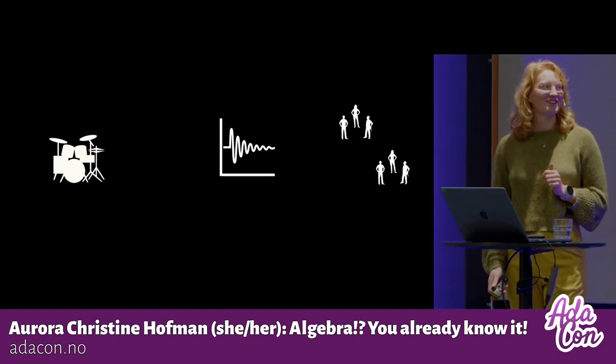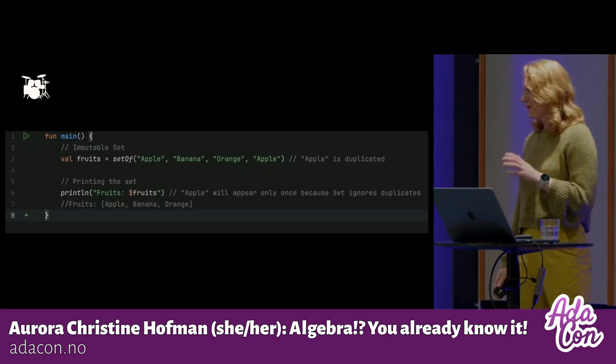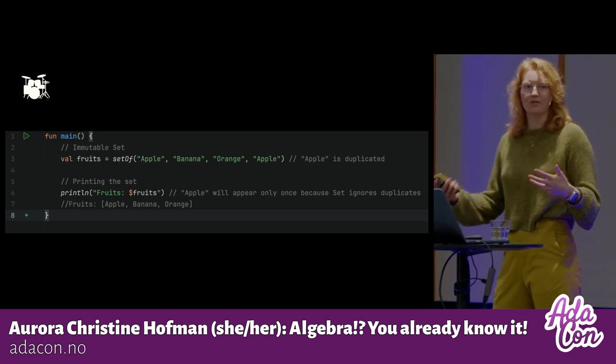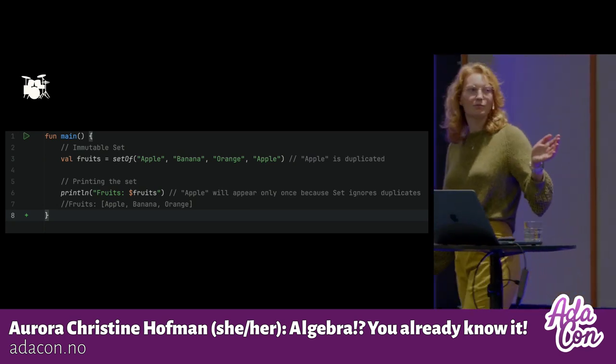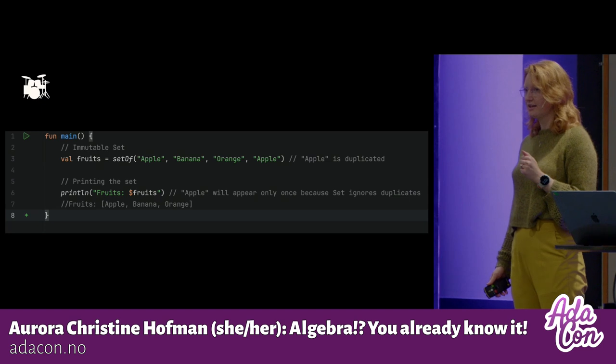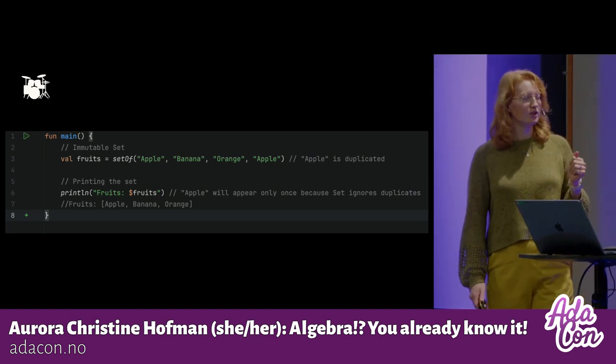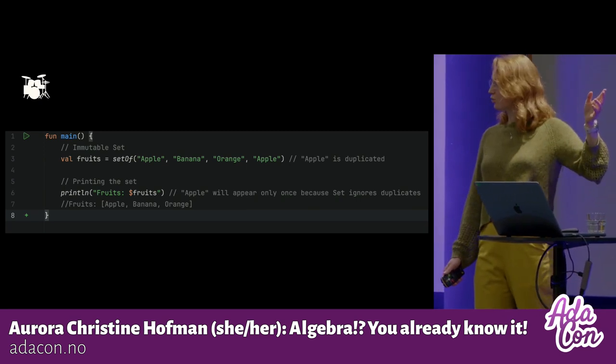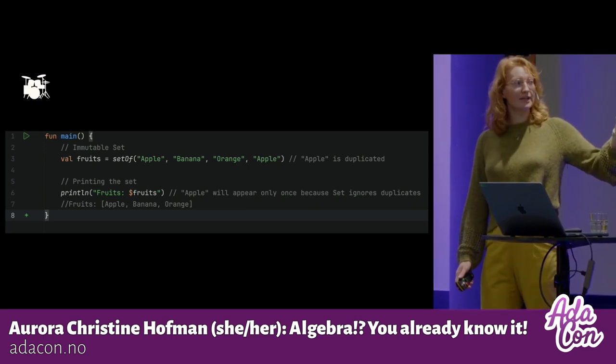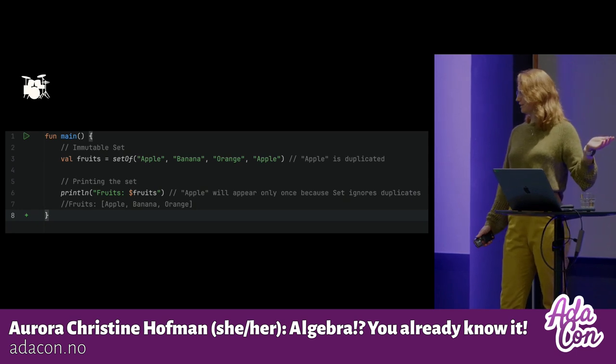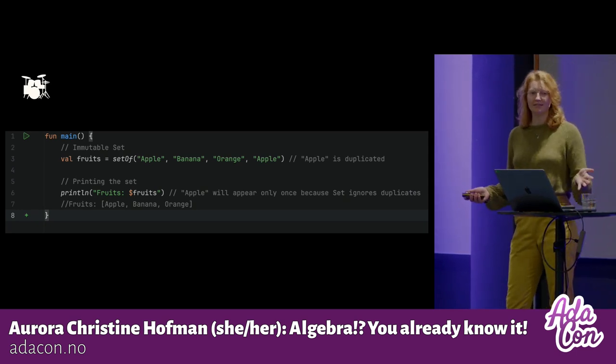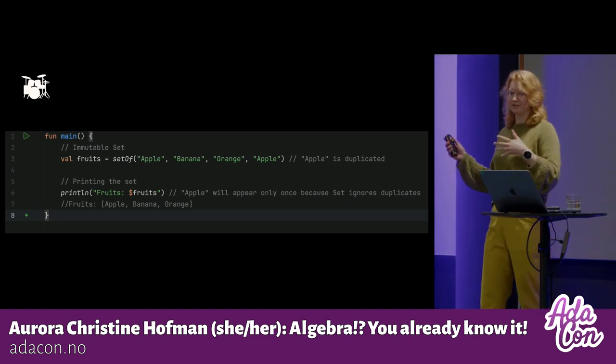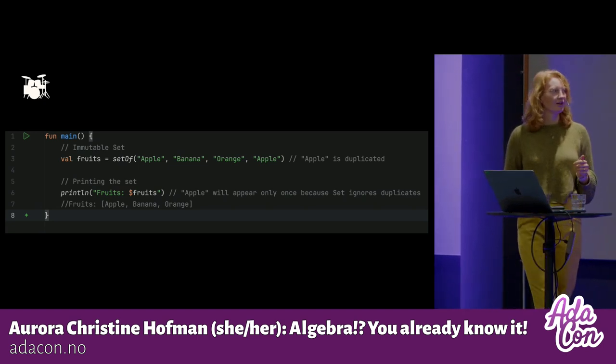But let's start with sets. This is probably something that you all have a natural feeling of what it is. And this is some Kotlin code where we see a set of fruits. And we can see that even though I put apple in my set twice, when I print my set, apple will only appear once. And that is because a set only consists of each value one time. So duplicates are ignored.